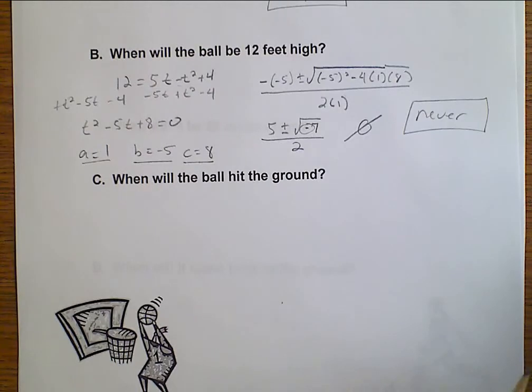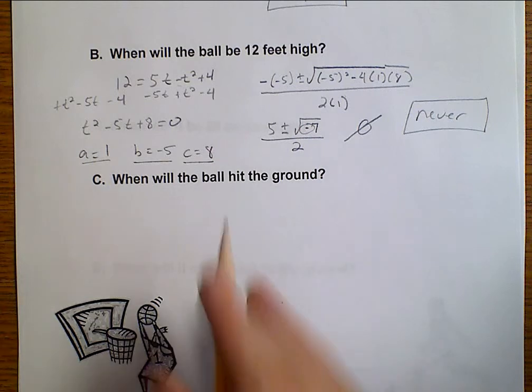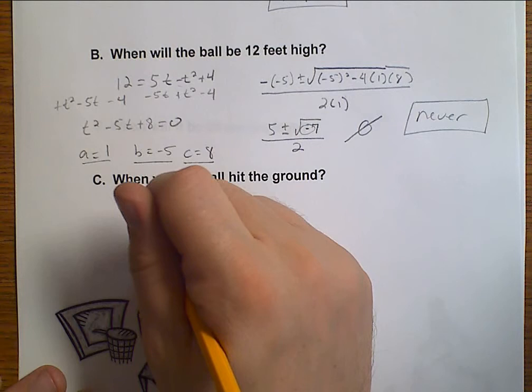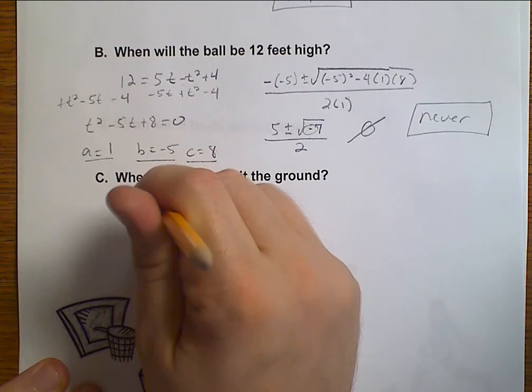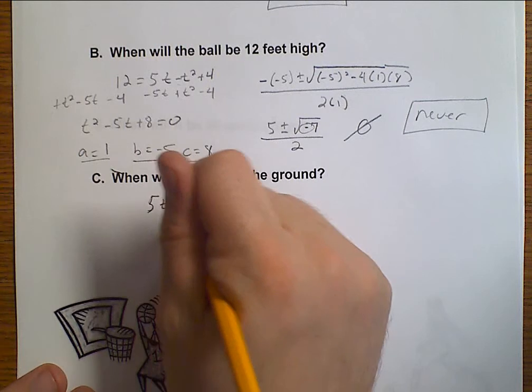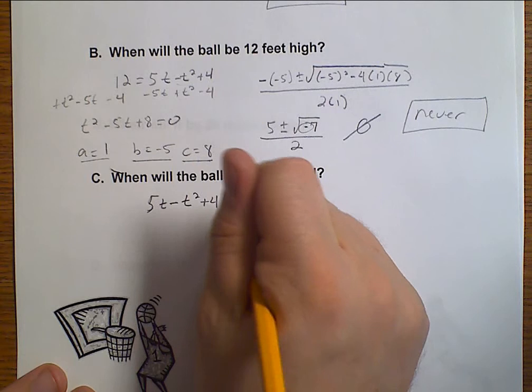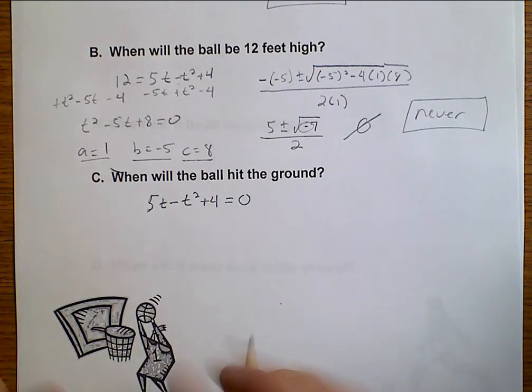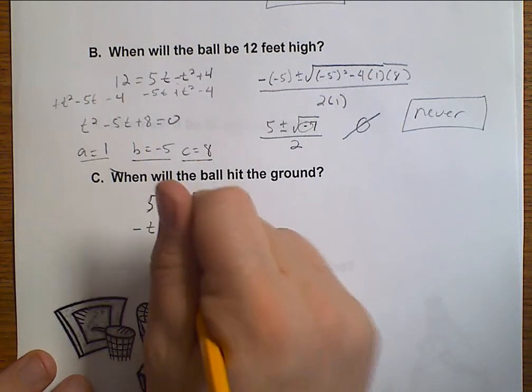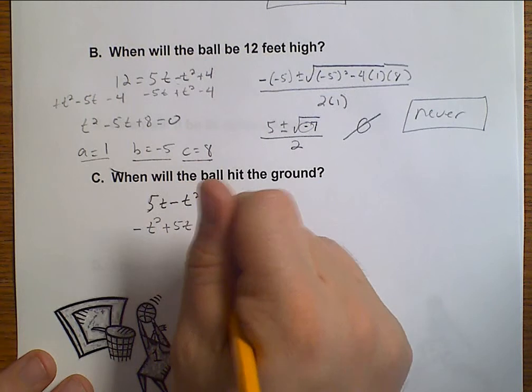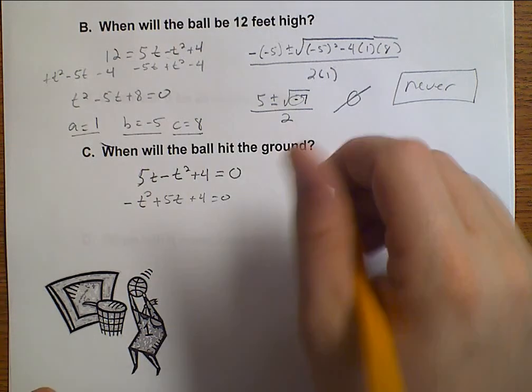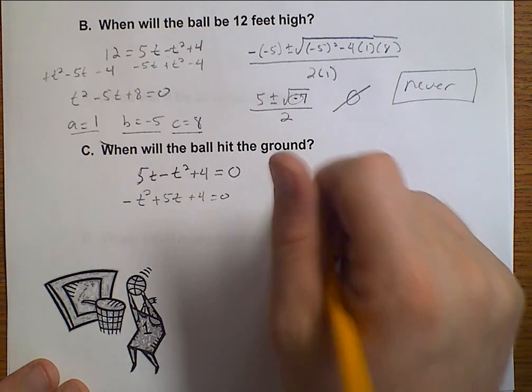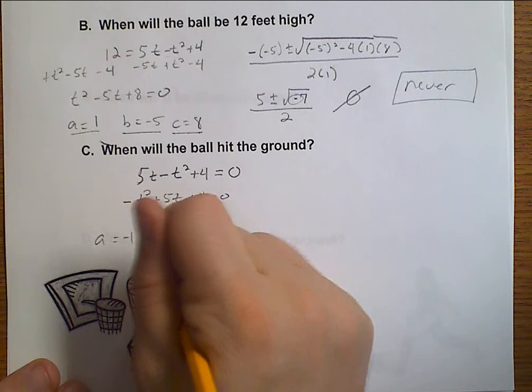Let's go ahead and figure out, if it never gets to 12, we want to know when does it hit the ground. We have 5t minus t squared plus 4 equals 0. Let's go ahead and rearrange this just a little bit. Negative t squared plus 5t plus 4 equals 0. I'm going to use, yesterday we used factoring to solve for this. You could use factoring to solve for this again, but instead I'm going to go ahead and just choose to use my quadratic formula. Well, a is negative 1, b is 5, and c is 4.